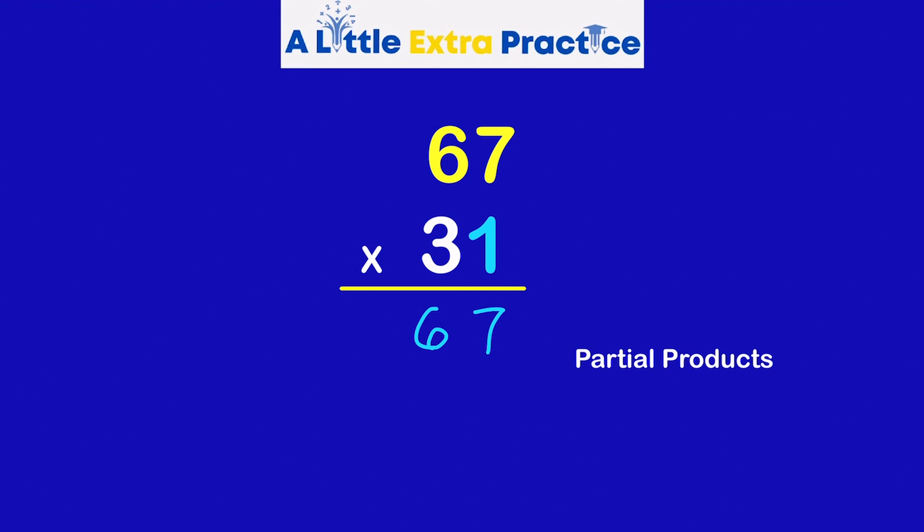Second partial product is going to be 30 times 67. Because it's 30, I'm going to put a 0 in the ones place under the 7. And now I can just focus on the digit like it's a 3. 3 times 7 is 21. 3 times 6 is 20.